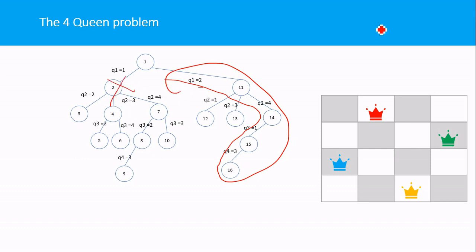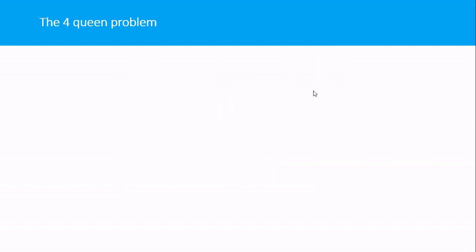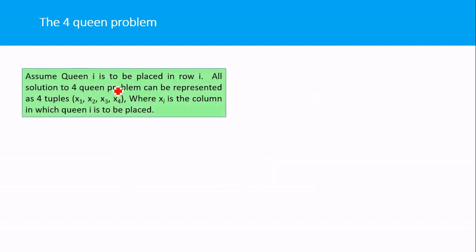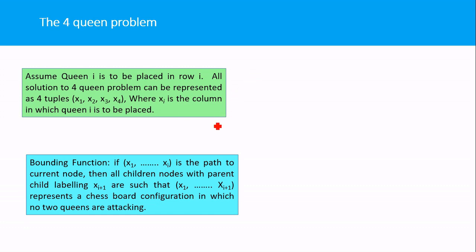The path Q1 = 2 leads to an optimal solution, while the path with Q1 = 1 did not. The solution vector for the 4-Queens problem is: Q1 = 2, Q2 = 4, Q3 = 1, Q4 = 3. Formally, we assume Qi is placed in row i, and all solutions are expressed as a 4-tuple (x1, x2, x3, x4) where each x represents the column in which the queen is placed.